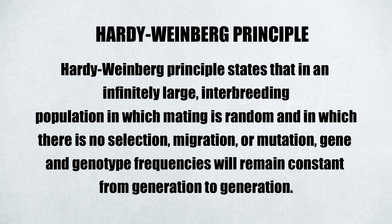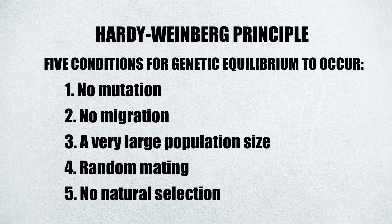But what if there's no mutation, natural selection, or migration? According to Hardy-Weinberg's principle, in an infinitely large interbreeding population in which mating is random and there is no selection, migration, or mutation, gene and genotype frequencies will remain constant from generation to generation. There are five conditions that must be met for genetic equilibrium to occur: no mutation, no migration, a very large population size, random mating, and no natural selection.